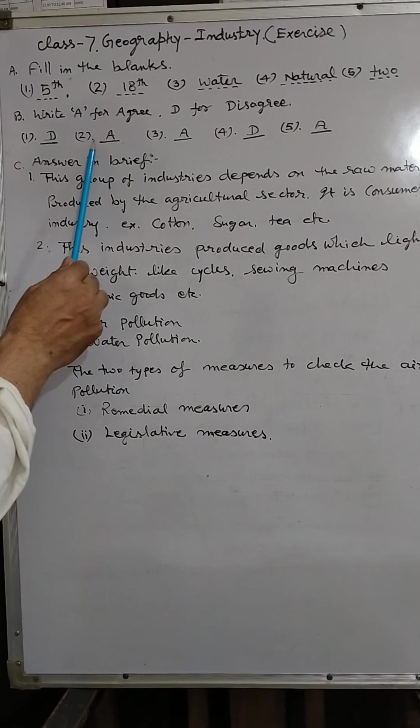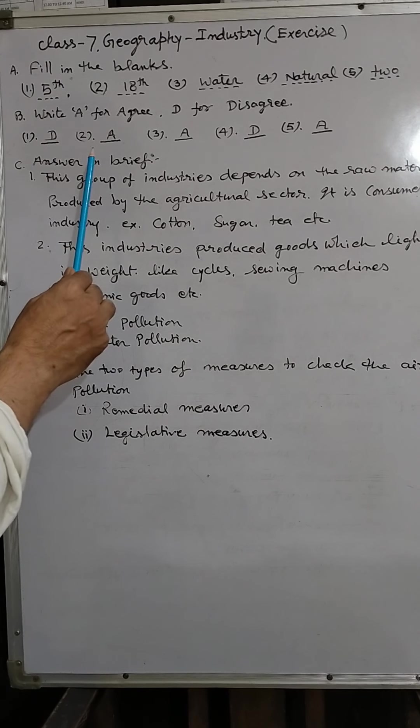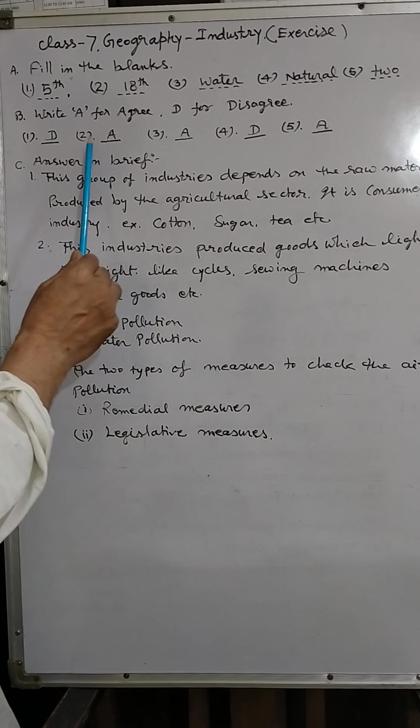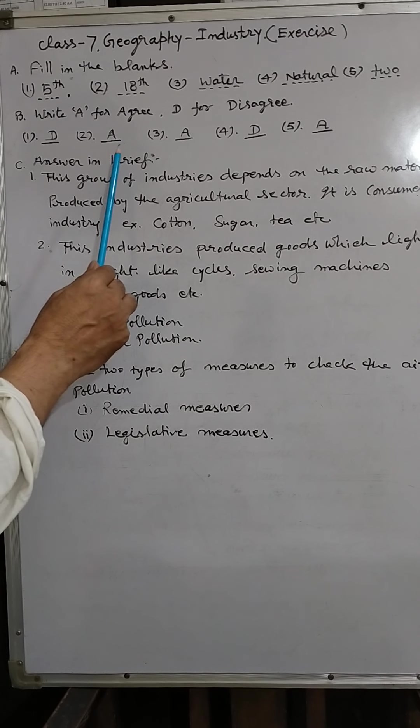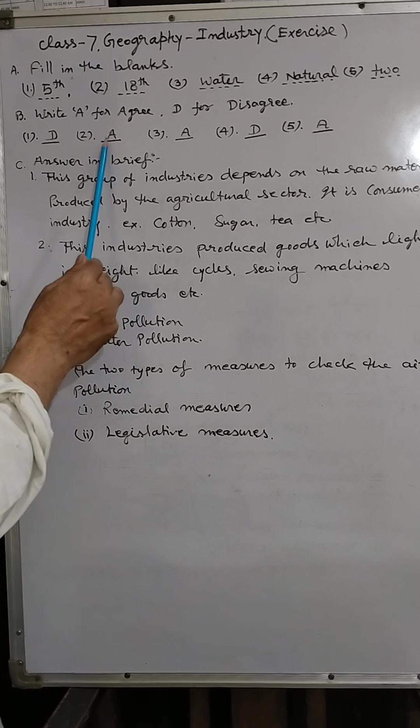Second sentence: Labor is a very important factor for the location of industry. It is yes, means agree. Labor is very important. If any industries are set up then labor's availability is seen. So this is agree.